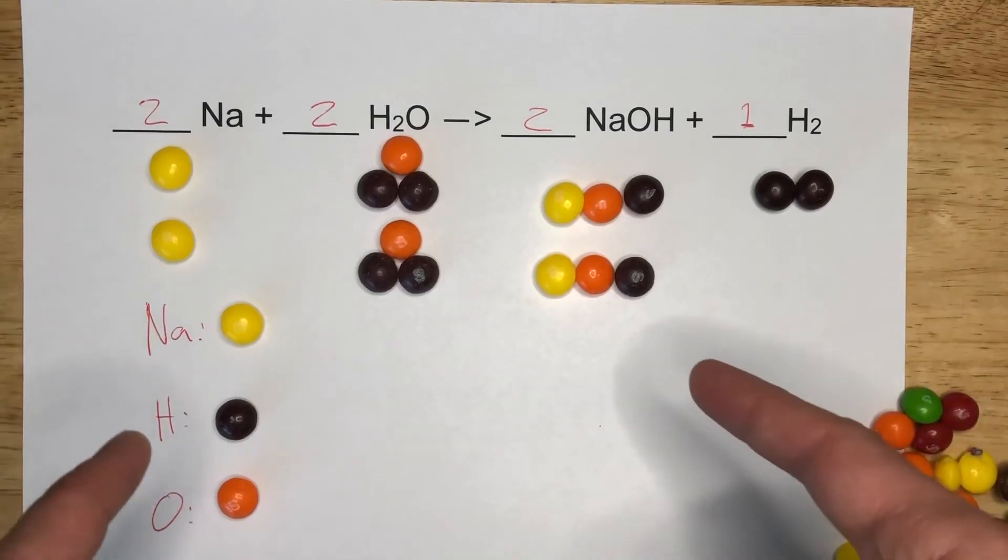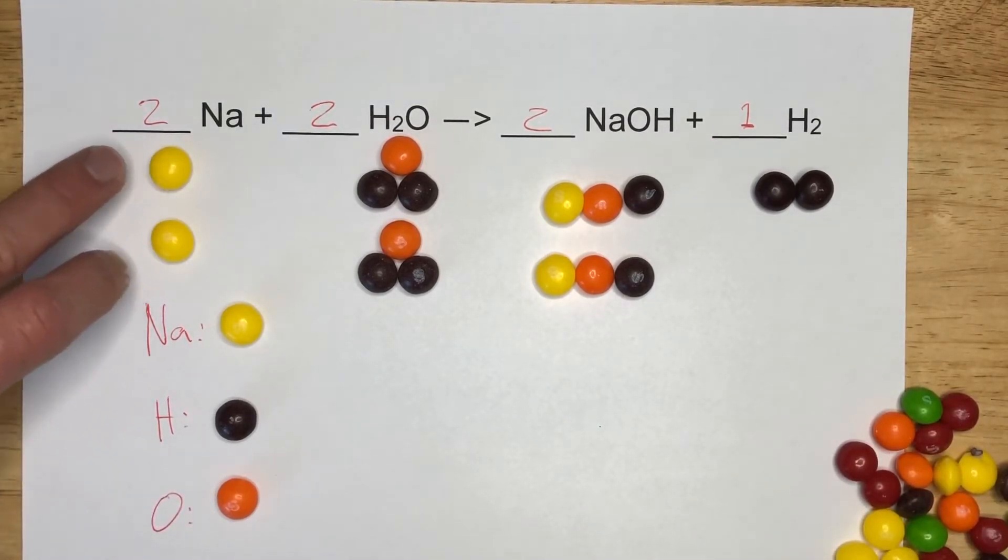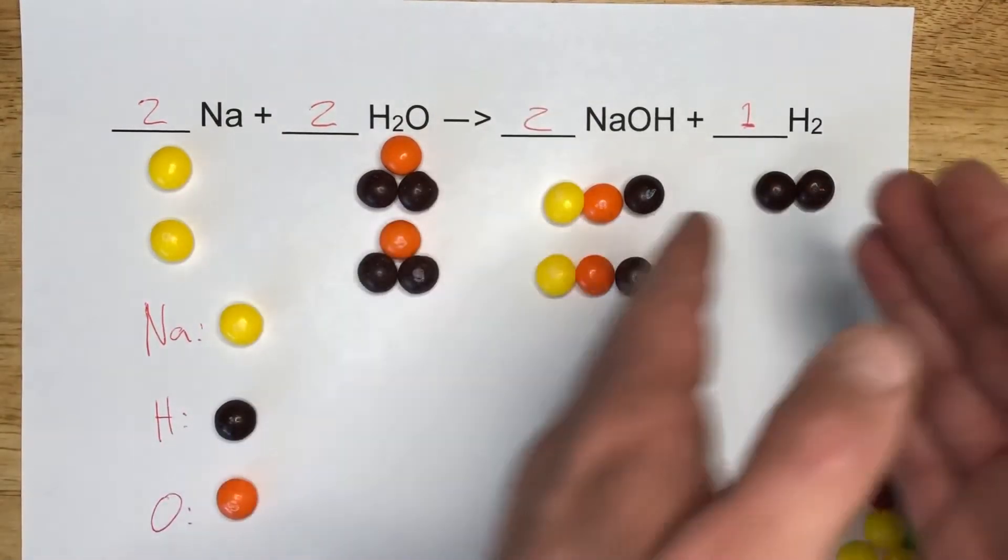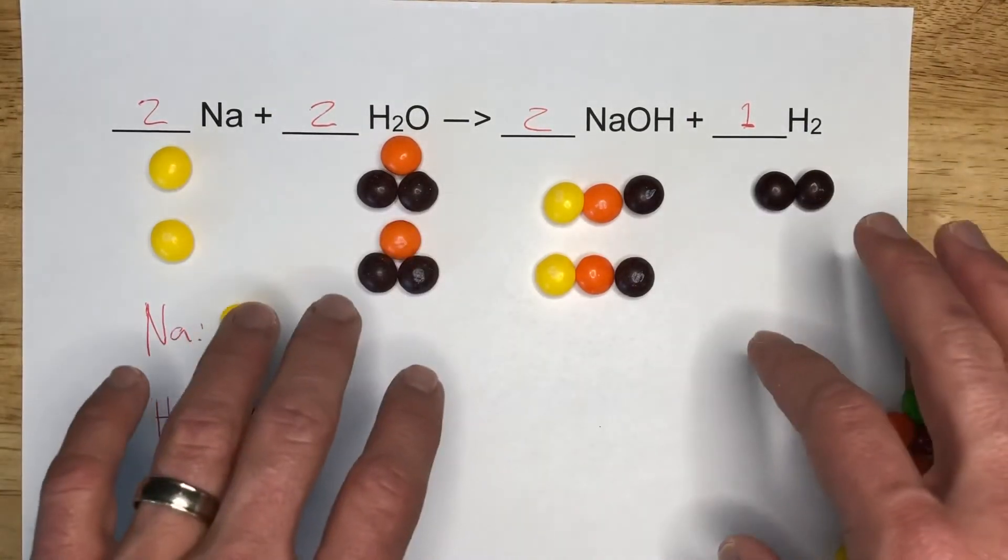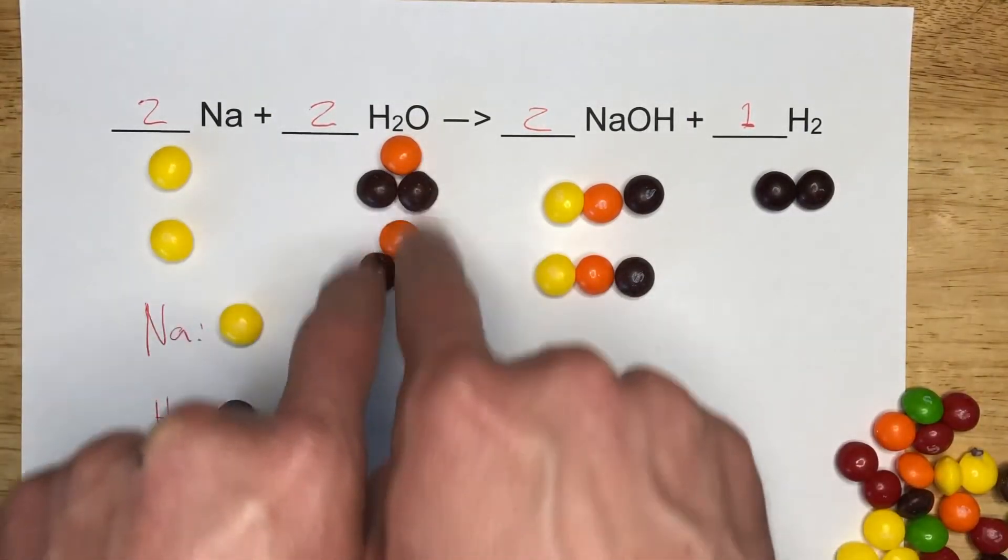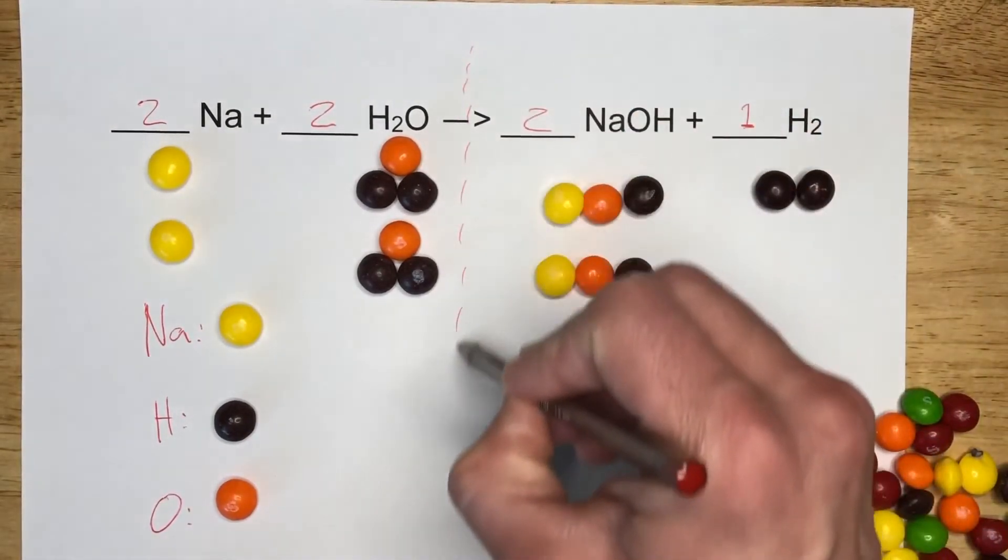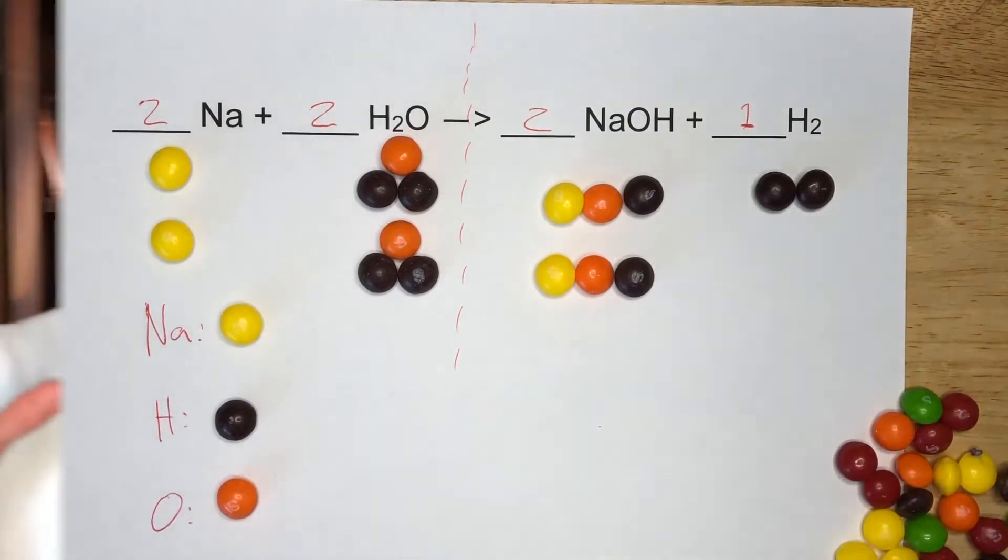Did you guys get this? Hopefully you did. Just to go over it real quick, we have two of these Na's reacting with two H2O molecules, and then we have two NaOHs and one H2. We can count out: we have two Na on either side, four H's on either side, right? Two here, two here, so that's four on the left and then four on the right. Try a little dividing line here, and then lastly we have two O's on either side. So two O's here and two O's here.